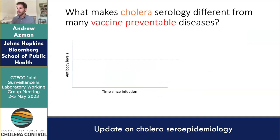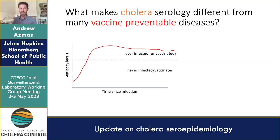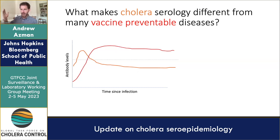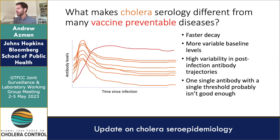For a classic vaccine-preventable disease like diphtheria, once someone is exposed or vaccinated, antibody levels rise and more or less remain elevated for a long period — making it easy to classify whether someone was ever infected or vaccinated. With cholera, unfortunately, after infection we have a rapid rise in antibody levels followed by fairly rapid decay, with a lot of variability. This makes it very hard to use a single threshold to say whether someone was ever infected or recently infected.